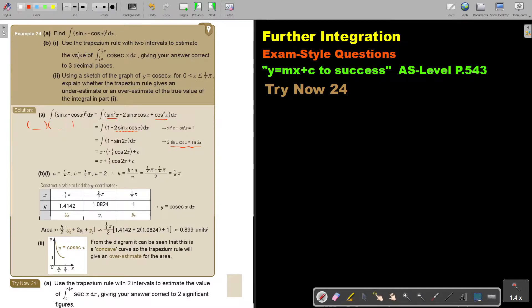Then, use the trapezium rule with two intervals to estimate the value of this, giving your answer correct to three decimal places. Now, can you remember? We always say, this is A, this is B. So A, B, and how many intervals did they say? There they say, two. So N is two. I work out this, and I get one over eight pi.